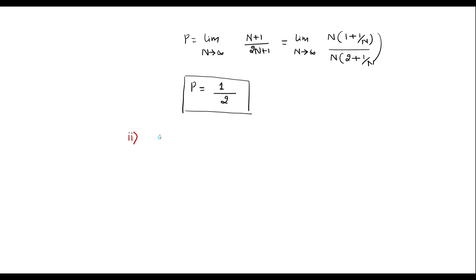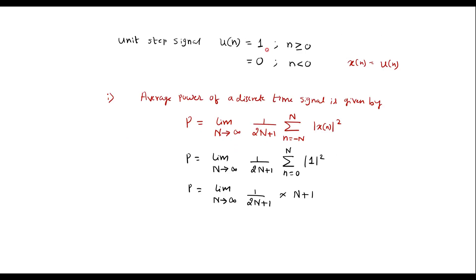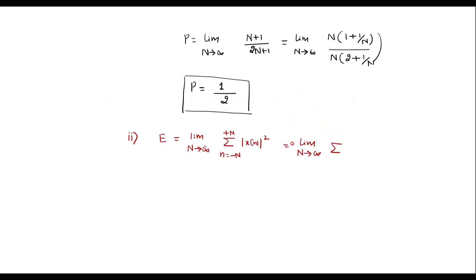The energy of any discrete signal is given by the formula: E is equal to limit n tends to infinity, summation from n equal to minus n to plus n of x of n squared. Therefore for the unit step sequence, since the signal exists only for n greater than or equal to 0, the limit varies from n equal to 0 to n, with x of n equal to 1, that is 1 squared. This gives limit n tends to infinity of summation from n equal to 0 to n of 1, which as n tends to infinity gives infinity. So the energy of the signal is infinity.